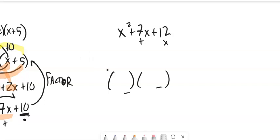We want numbers that multiply to 12 but add to 7. Start thinking about factors of 12: 1 times 12 doesn't add to 7, 2 times 6 doesn't add to 7, 3 times 4 adds to 7.